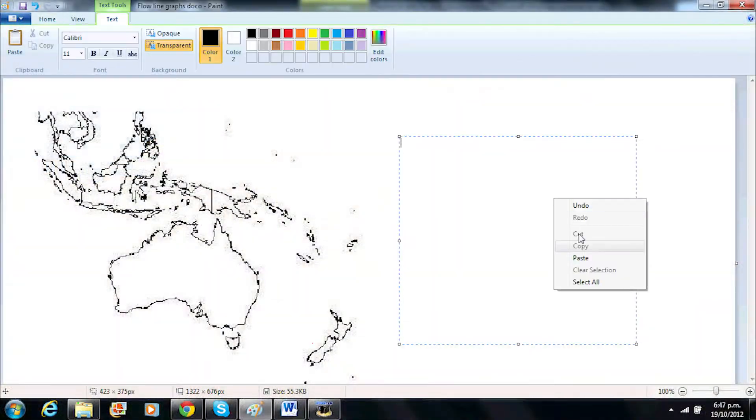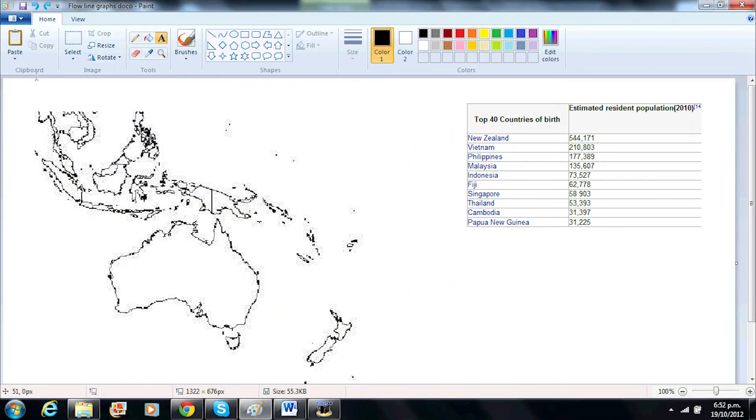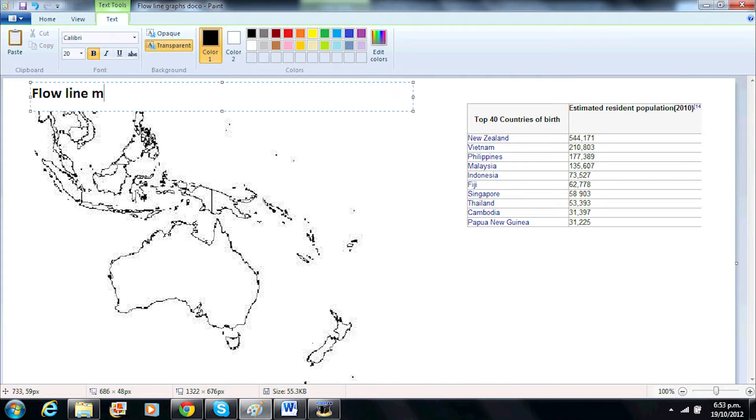First we need to collect the data which is in the table to the right of the screen. Then we will give our map an appropriate title.